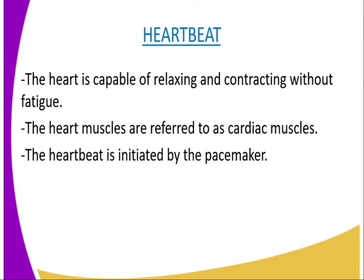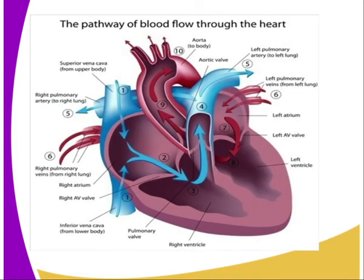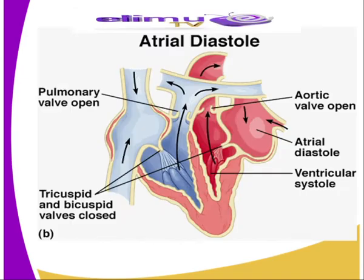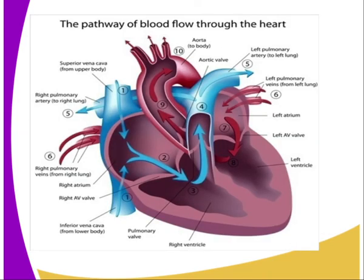Now we want to look at a bit more about the heartbeat. The heartbeat initiates the circulation of the blood in the body. The heart is capable of contracting and relaxing rhythmically without fatigue due to its special muscles called cardiac muscles. The cardiac muscle fibers are interconnected so that waves of contraction can travel throughout the mass of the muscles. The rhythmic contraction of the heart arises from within the heart muscles without nervous stimulation, and therefore the heart muscles are said to be myogenic.